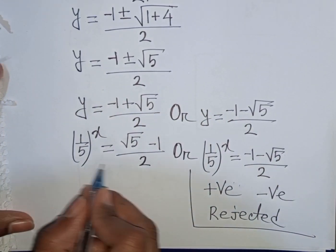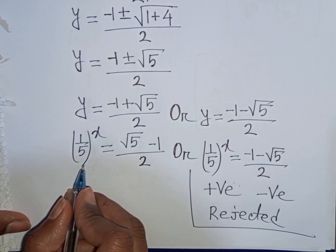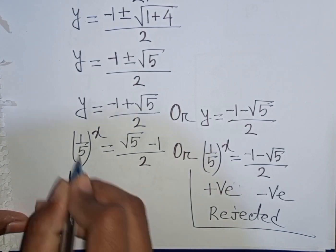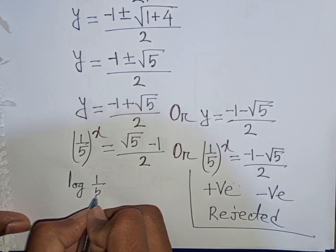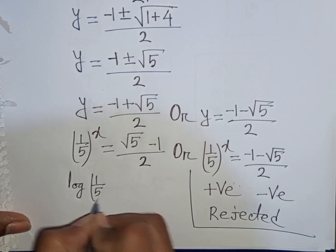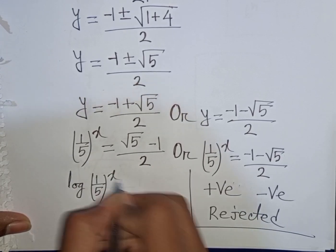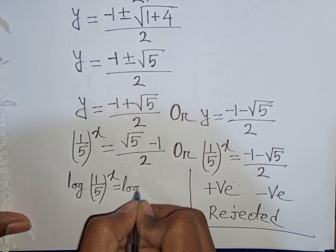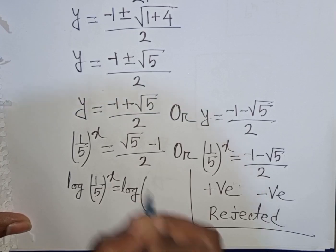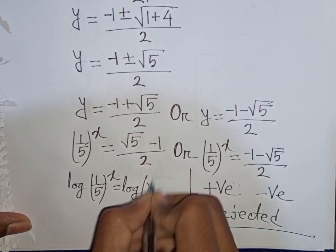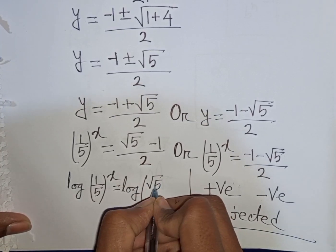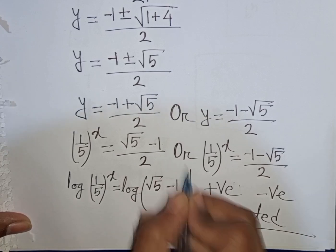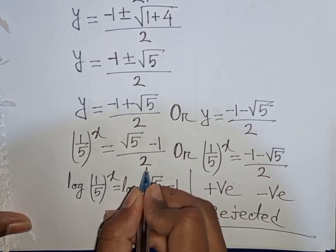From the valid solution, we apply log to both sides: log of (1 over 5) power x equals log of (square root of 5 minus 1) over 2.